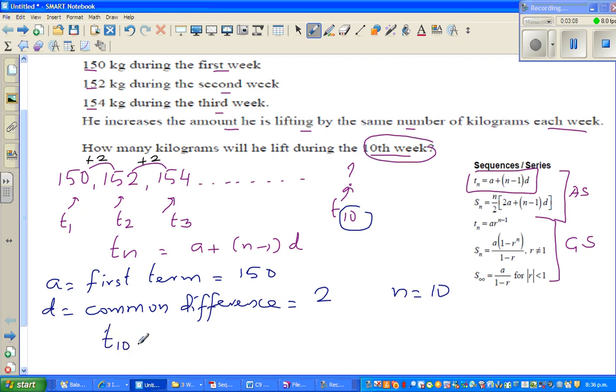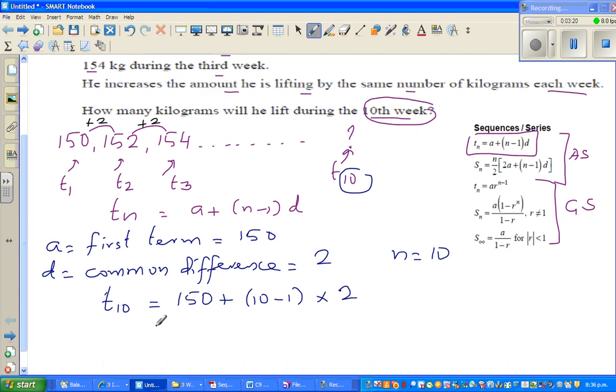So t10 can be written as 150 plus 10 minus 1 times 2, just like that. Let us simplify. We use the BEDMAS rule always. So this is 9 times 2 which is 150 plus 18, so it is 168 kg.